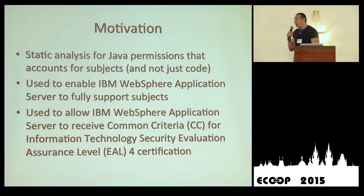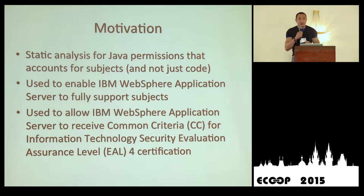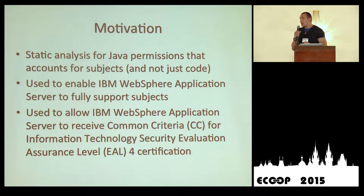Java programs ran with a permission model that checks what permissions are needed by the code running. But in addition to that, programs can also run under the authority of a user or a process. A user or a process are known as subjects. This is true not only for Java, but also for the Microsoft .NET common language runtime. So, what permissions are needed by Java programs and what permissions are needed by the users of those programs in order to execute without security exceptions?